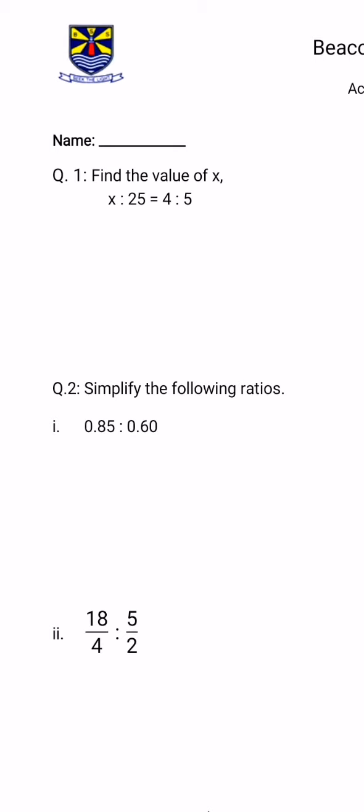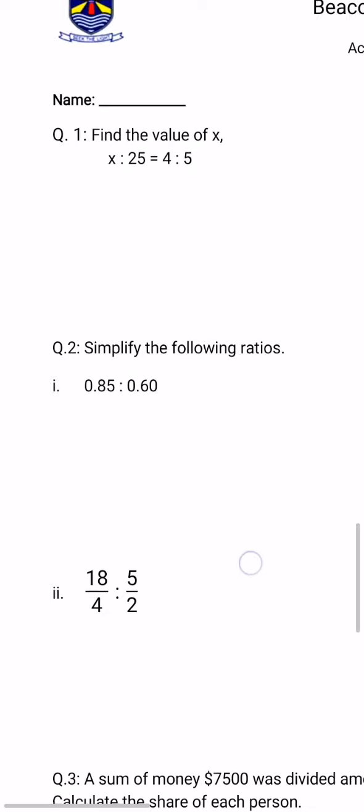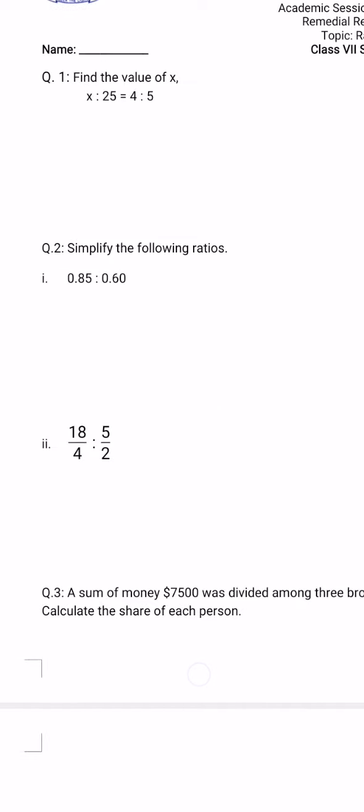Now if you look at the second part of question number 2, we have a ratio 18 by 4 to 5 by 2. How to solve that? We know that whenever we have fractions we always go for taking LCM. We need to make denominators the same, so we will take LCM of 4 and 2, which is 4. We need to multiply the second fraction above and below by 2. This way denominators will become the same and then we will cancel off the denominators. Afterwards we will simplify the numerator terms.